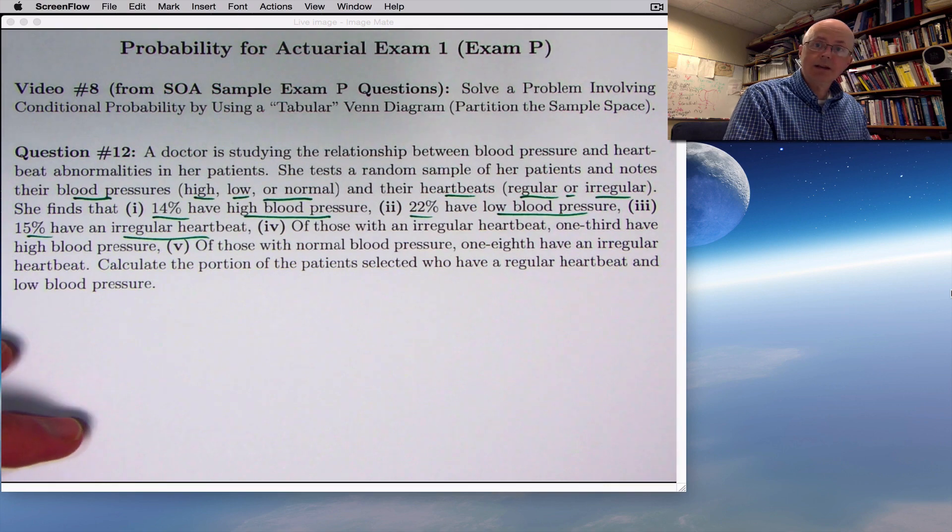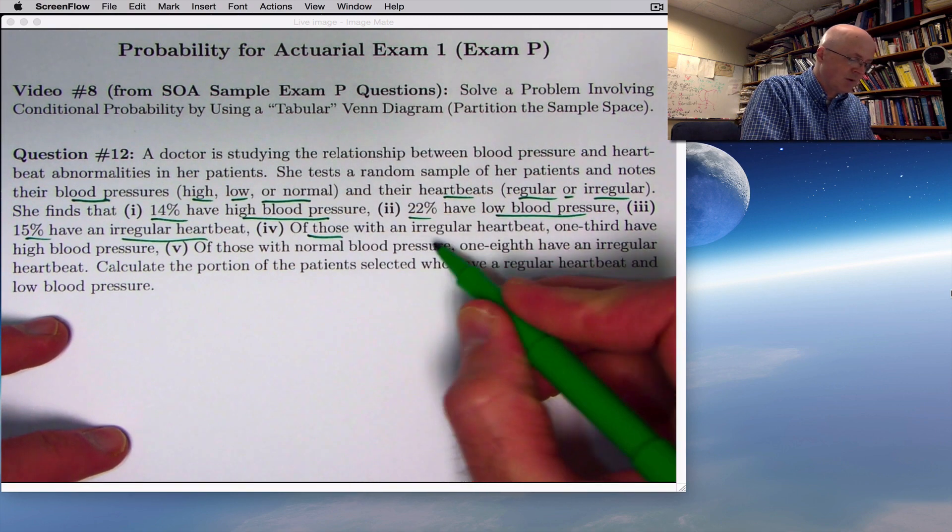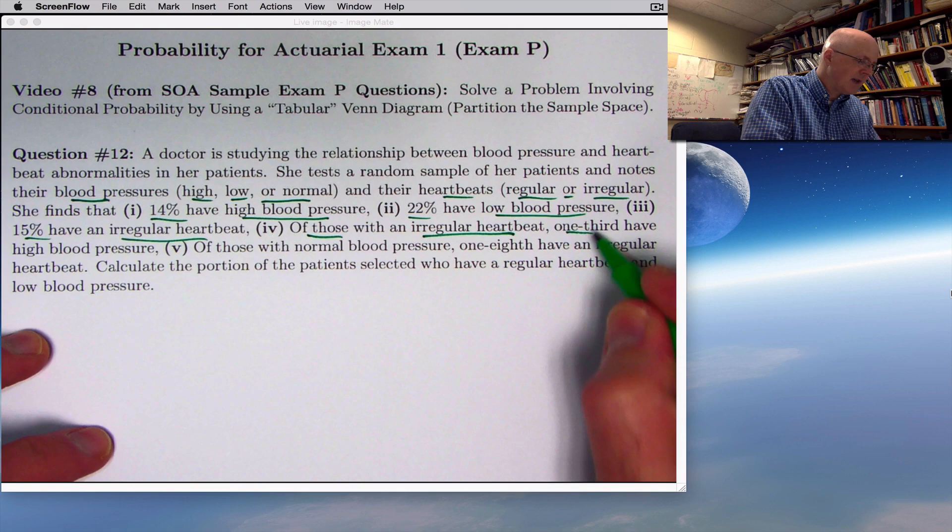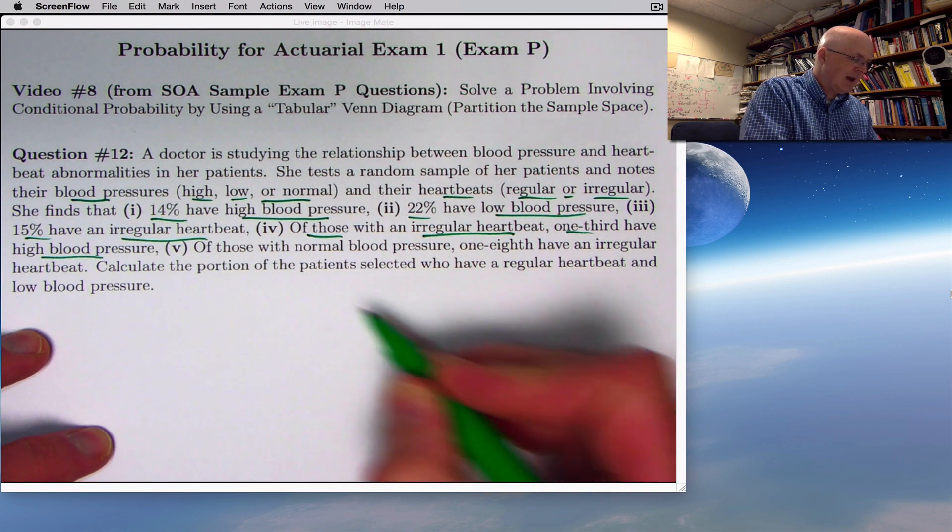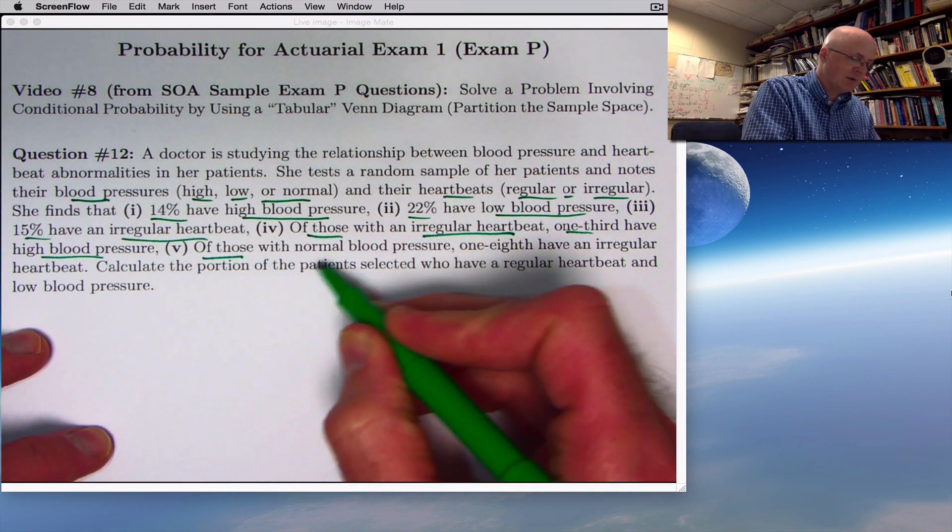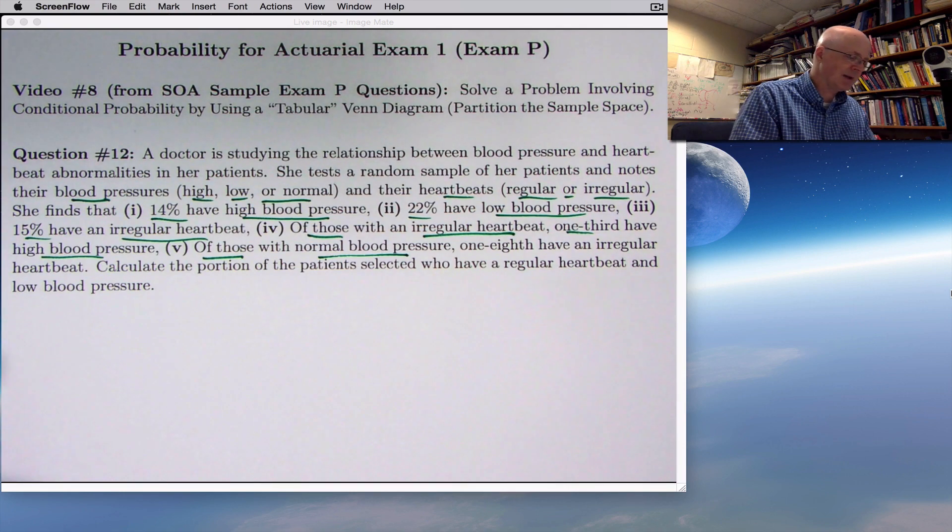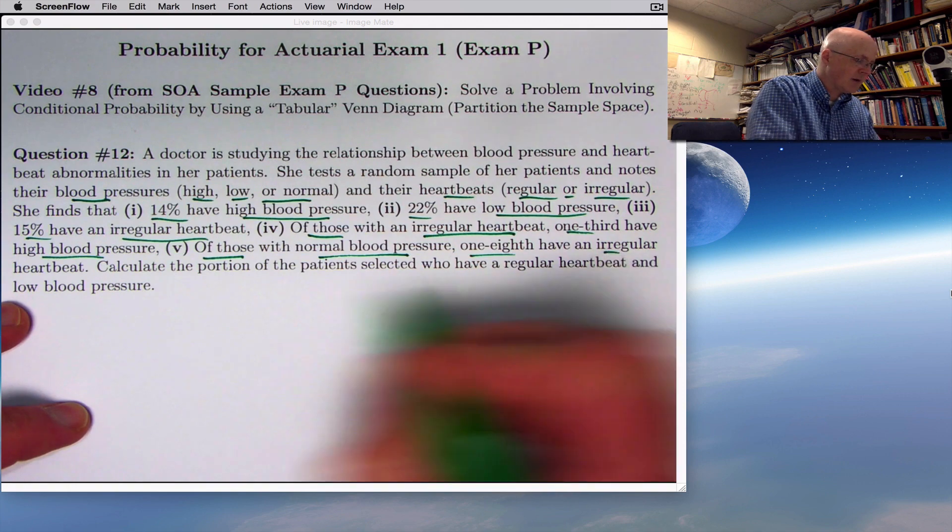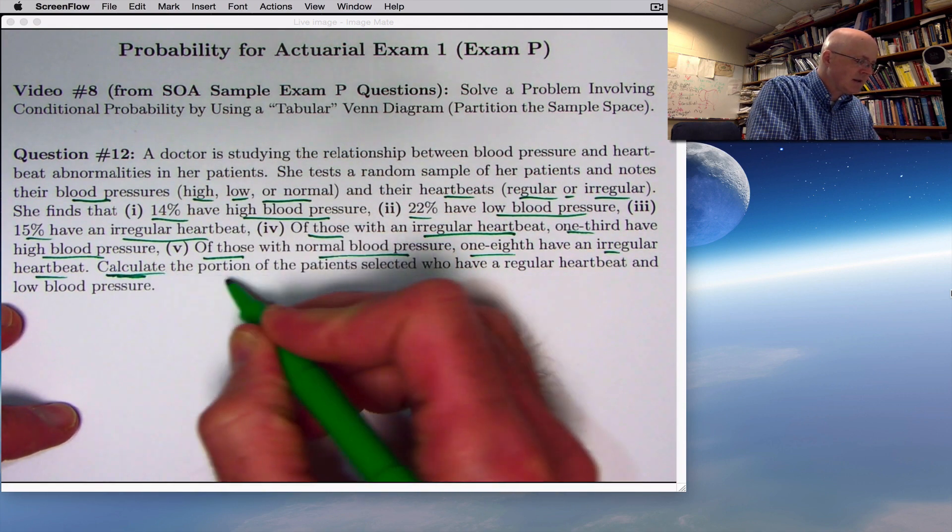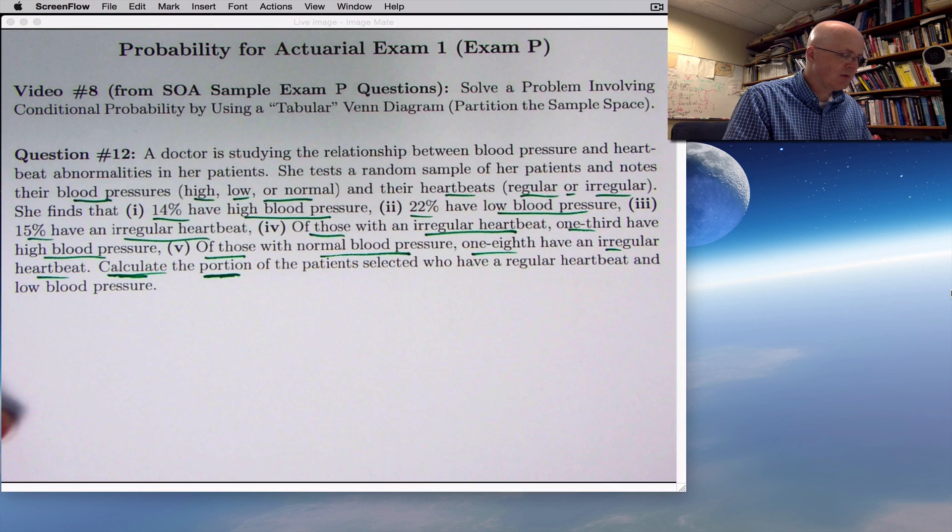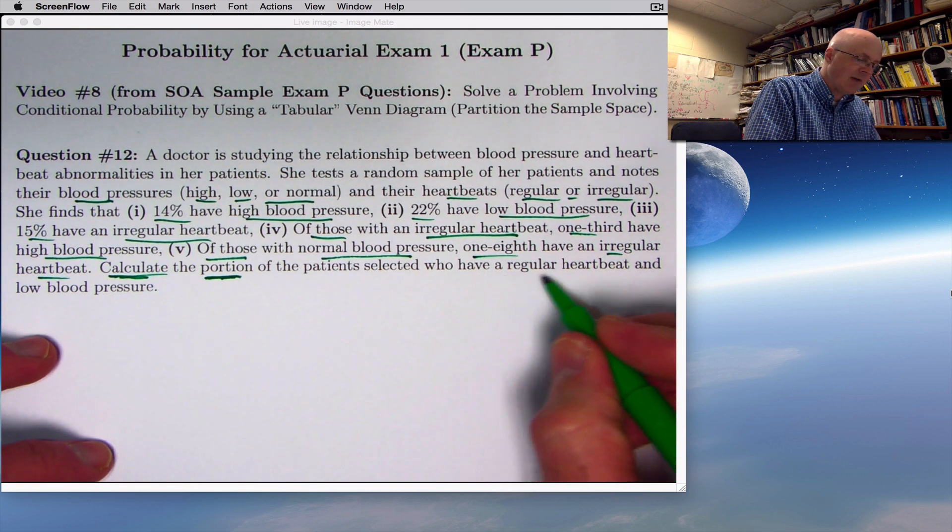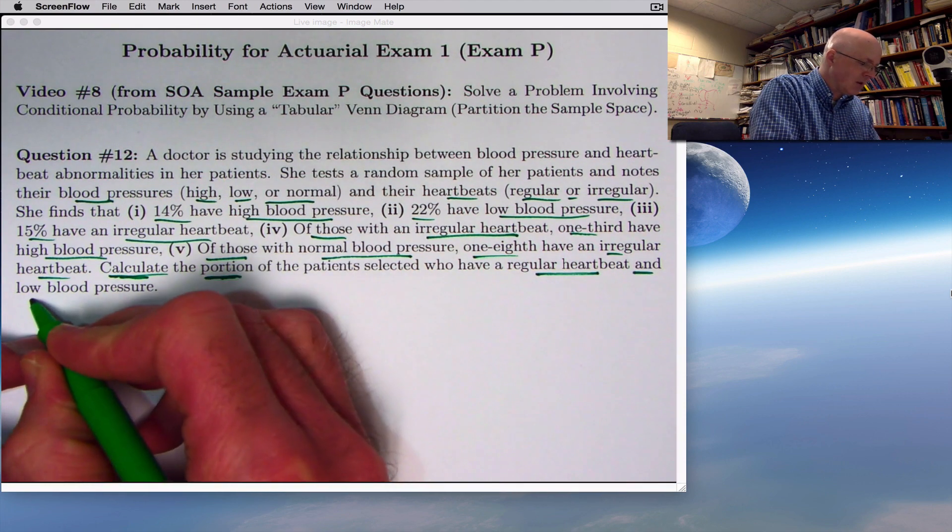And then we get into the conditional probability information. Of those with an irregular heartbeat, so you've shrunk the sample space down to just those who have an irregular heartbeat, one-third of them have high blood pressure. And furthermore, of those with a normal blood pressure, so again, you shrink the sample space down, we're talking conditional probability, one-eighth have an irregular heartbeat. We want to calculate the portion of the patients selected who have a regular heartbeat and low blood pressure.